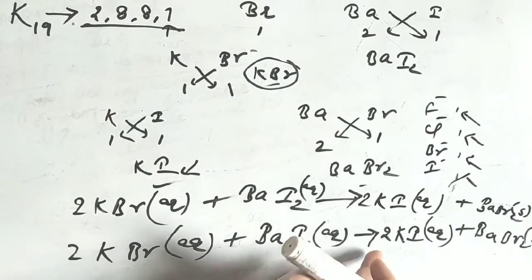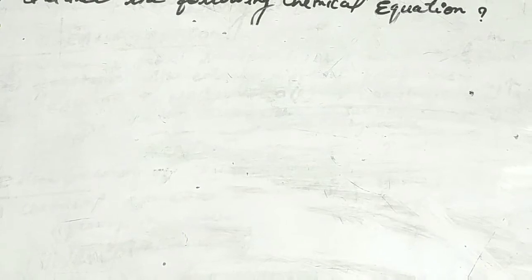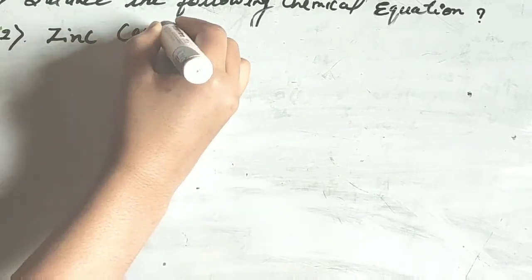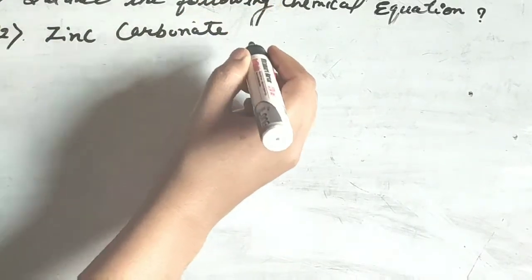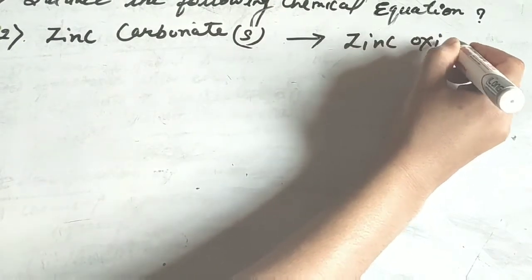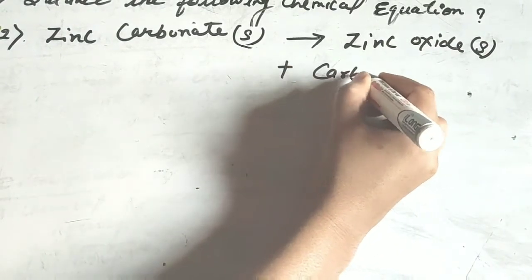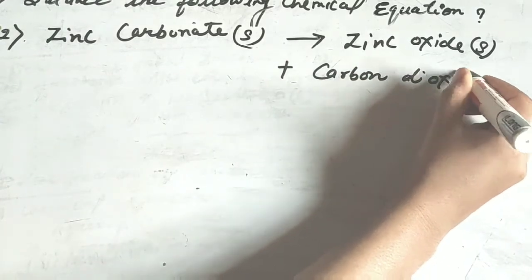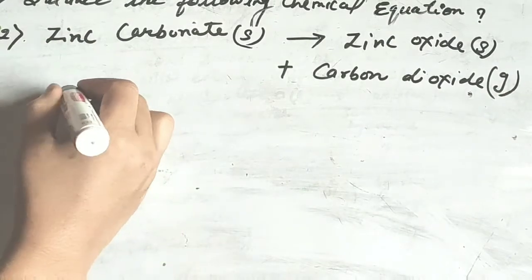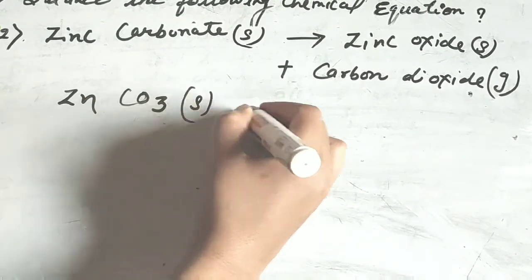The equation is now balanced. Next question: zinc carbonate in solid form gives zinc oxide in solid form plus carbon dioxide in gaseous form. The symbol of zinc is Zn, carbonate is CO₃, so the reactant is ZnCO₃ in solid form.